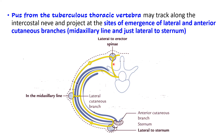If a vertebra is involved in tuberculosis, the pus formed may track along the intercostal nerve and intercostal vessels and can project just beneath the skin. It can appear at the sites of emergence of the lateral and anterior cutaneous branches. So if there is tuberculosis of a thoracic vertebra, pus may be seen just beneath the skin at the mid-axillary line (where the lateral cutaneous nerve pierces the muscles to reach the superficial fascia) or just lateral to the sternum. If you find pus in these regions, one reason could be tuberculosis of the vertebrae.